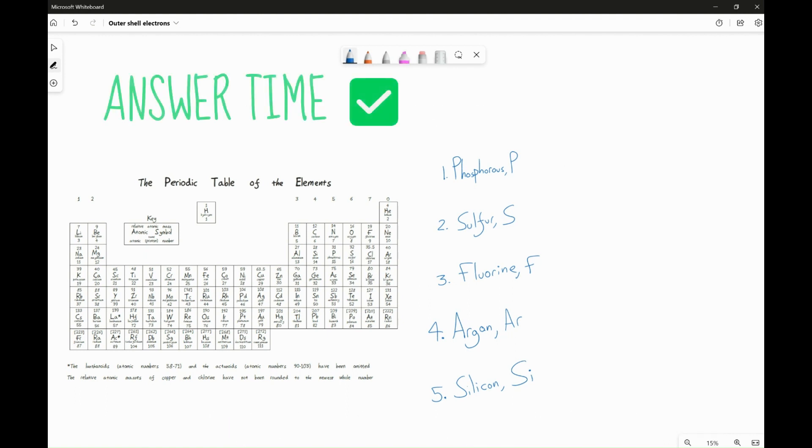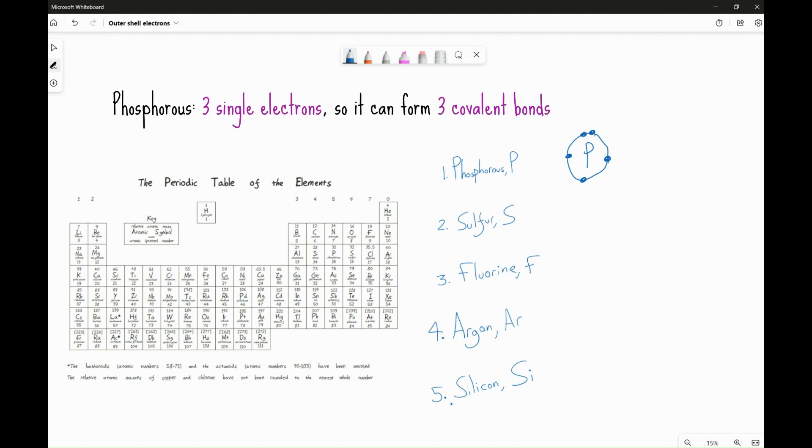Okay, let's review the answers. So, phosphorus has five electrons. It's got one pair of electrons and three single electrons, so it can form three bonds. Sulfur has six electrons in the outer shell, two paired and two single.